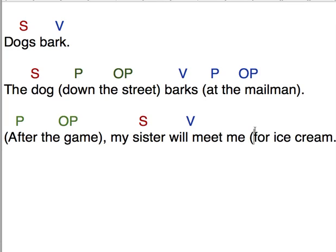And for ice cream is also a prepositional phrase. Notice how these prepositional phrases can appear at the beginning, at the middle, at the end, anywhere in the sentence. They give us more detail. When is my sister going to meet me? Why is my sister going to meet me? She'll meet me after the game for ice cream.